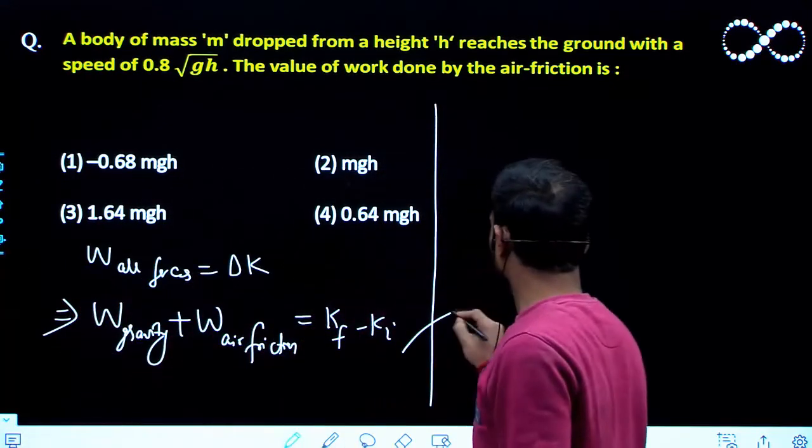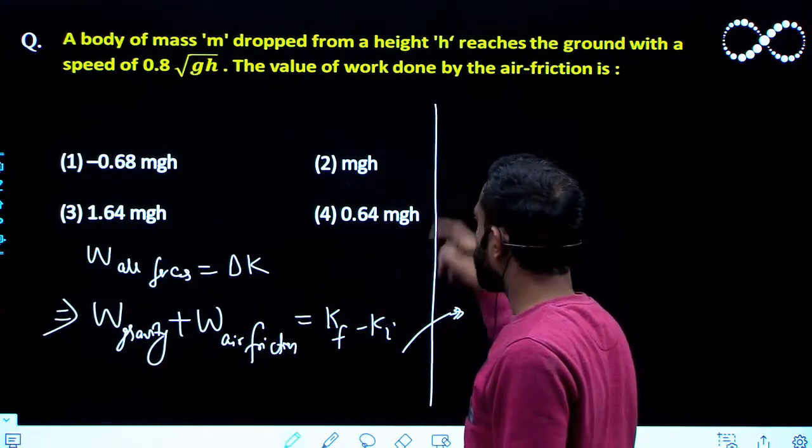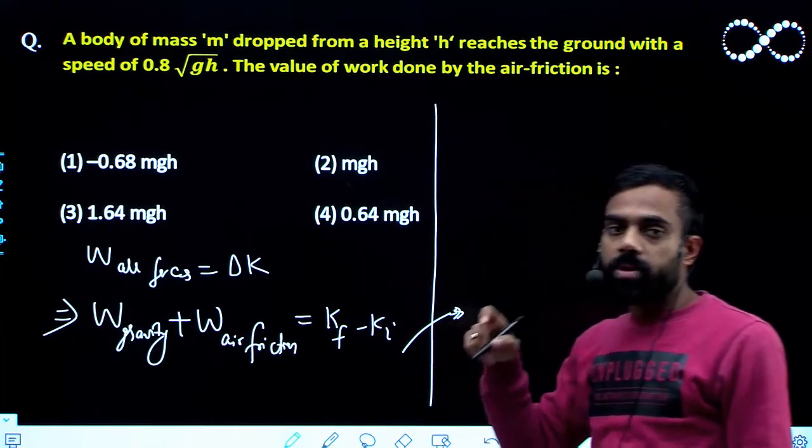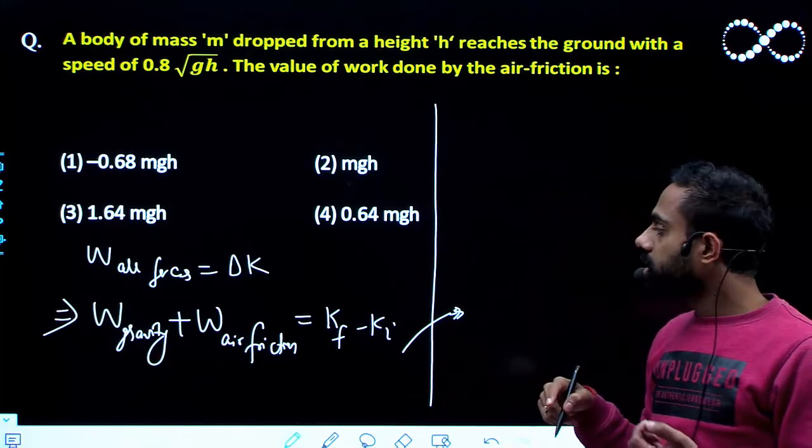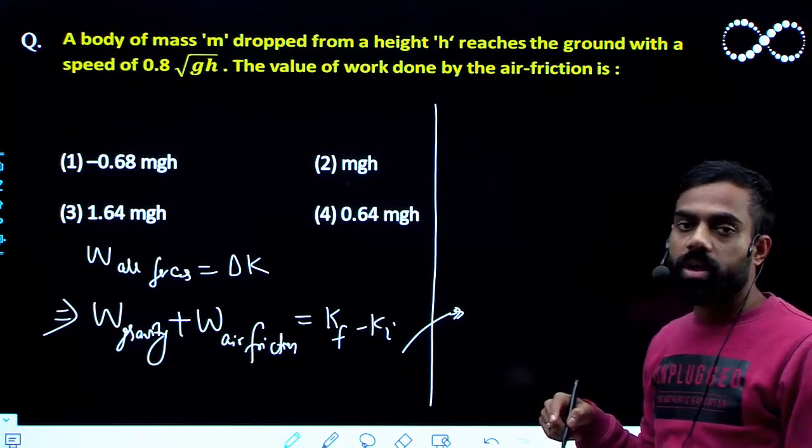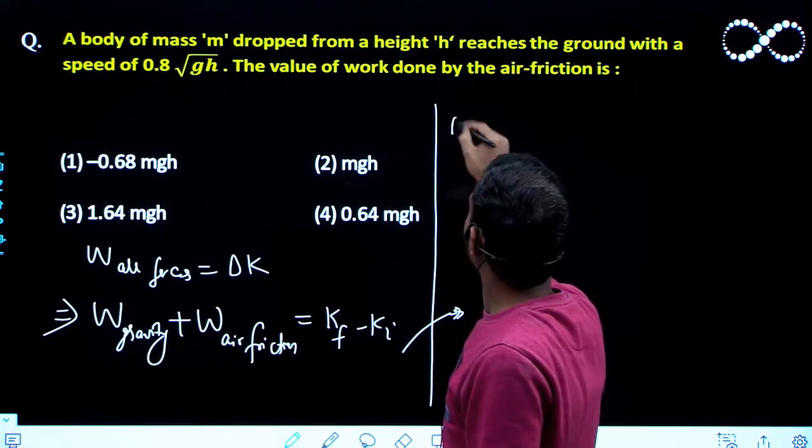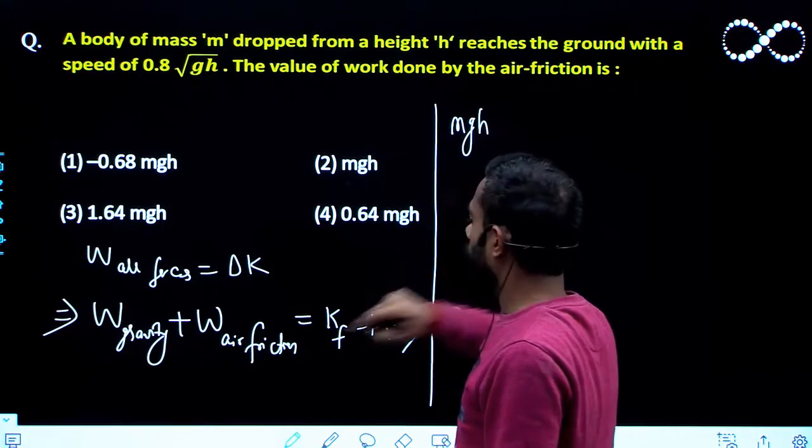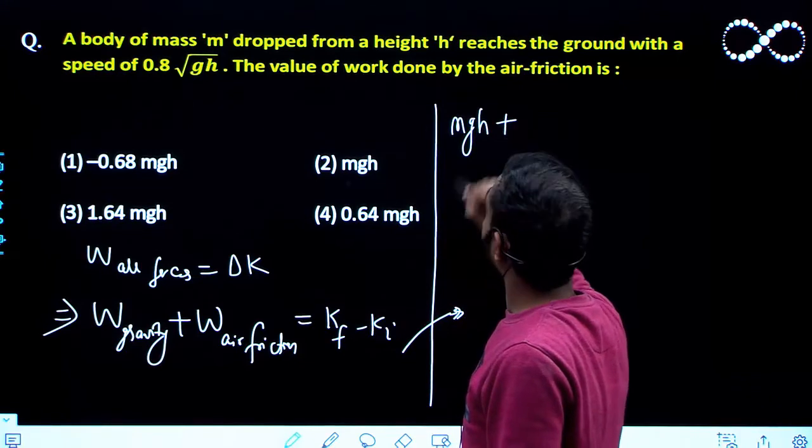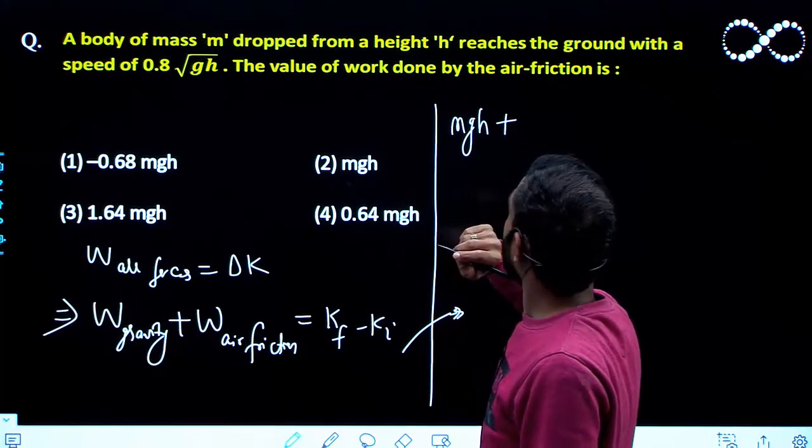So I can see here work done by gravity. Since the ball is coming down, the displacement is in downward direction and the gravitational force is also acting in downward direction. So work done by gravity will be positive. So I will see here that is mgh.